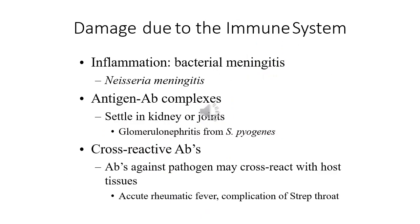Different microbes cause different diseases by different means. Neisseria meningitidis causes bacterial meningitis mainly through inflammation. Some diseases result from antigen-antibody complexes — bacterial antigens combined with host-produced antibodies form complexes that settle in kidneys or joints, causing glomerulonephritis. There are also cross-reactive antibodies that provoke autoimmunity through a process called molecular mimicry.